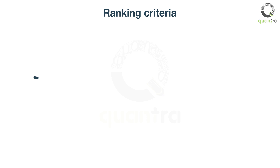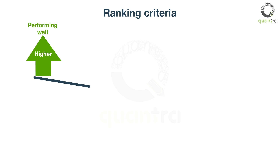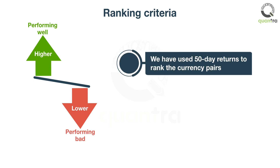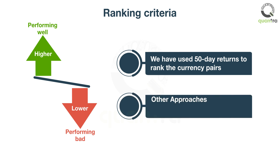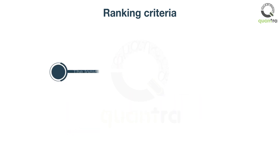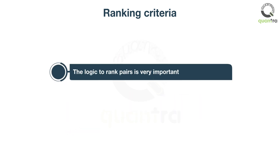We have sorted the currency pairs based on 50-day returns. Higher returns indicate that a currency pair is performing well relative to others, and lower returns indicate it is performing badly. For illustration purposes, we used 50-day returns to rank the pairs. Some approaches could be based on technical data, fundamental data, sentiment data, or a combination of all three. The ranking logic is a very important component of the strategy — it is where you get an edge.